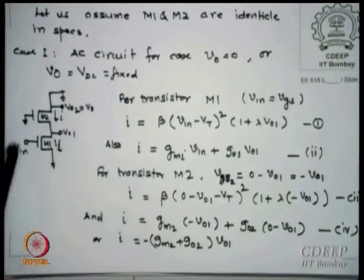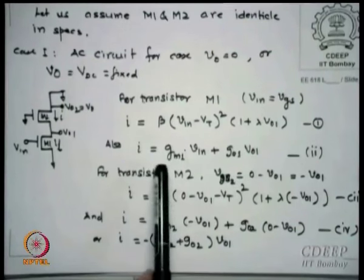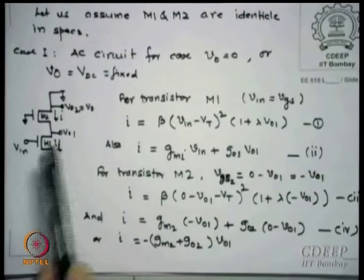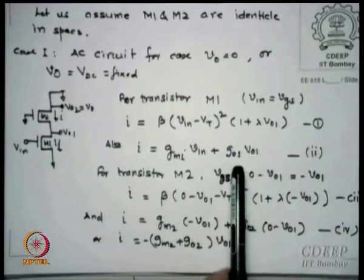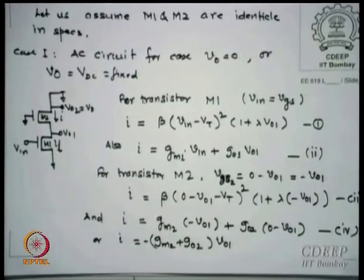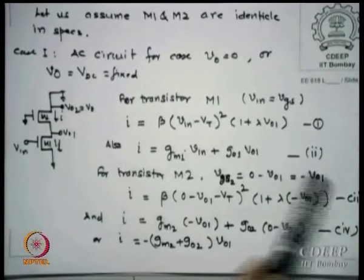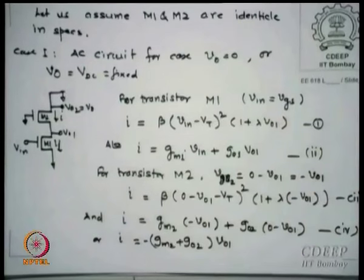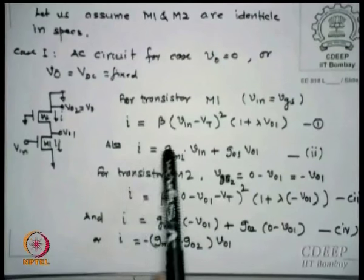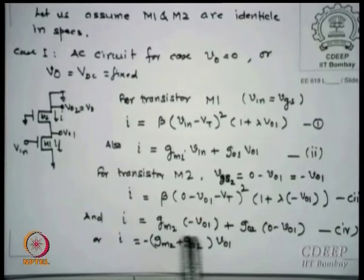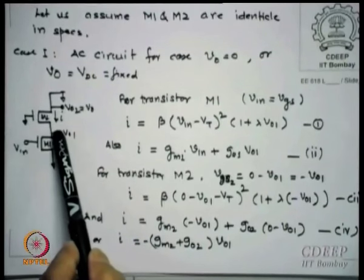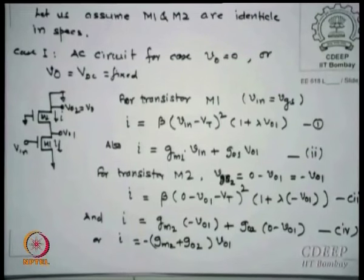Looking at M1 from the small-signal point of view: I = gm1 × Vin + go1 × Vo1. For transistor M2, the current is β(0 − Vo1 − Vt)² × (1 + λ(0 − Vo1)). In small-signal form for M2: Vgs = 0 − Vo1, so I = gm2 × (−Vo1) + go2 × (V0 − Vo1), which simplifies to I = −gm2 × Vo1 + go2 × (V0 − Vo1). Note both transistors carry the same current since only one current flows in series.